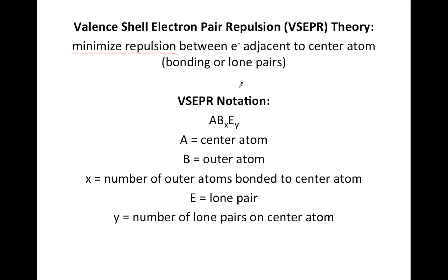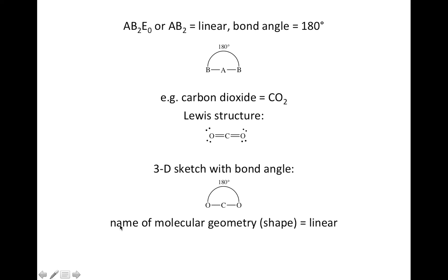For the slides that are about to happen, we're going to use a notation called VSEPR notation. A is going to stand for the center atom. B is going to stand for the outer atoms. X tells you the number of outer atoms. E represents lone pairs, and Y tells you the number of lone pairs on the center atom — not on the outer atoms, just the center atom.